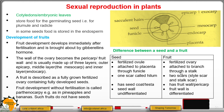Seeds normally have one scar called the hilum, whereas fruits have two scars — one where attached to the branch and one from attachment to the placenta. Seeds have a seed coat or testa, whereas fruits are covered with a pericarp. The seed wall is not differentiated, but the fruit wall is differentiated into three layers: the epicarp, mesocarp, and endocarp.